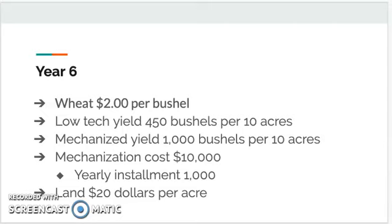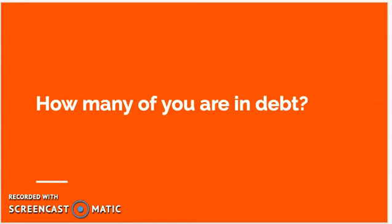Now wheat's back down to $2 per bushel, same as in year one. Figure out what you're going to do. Mechanization costs $10,000, with a $1,000 yearly installment fee, and your land is $20 per acre. Now let's move on to year seven. Wheat is $1 per bushel. Low-tech yield is 450 bushels per 10 acres; mechanized yield is 1,000 bushels per 10 acres. Now — how many of you are in debt? Look at your balance sheet. How many of you have found that you are spending more money than you're bringing in?